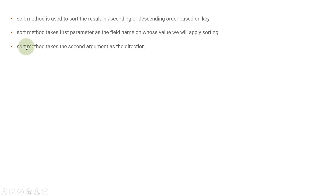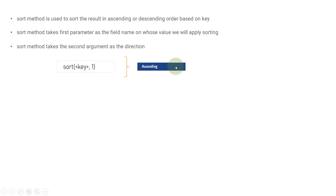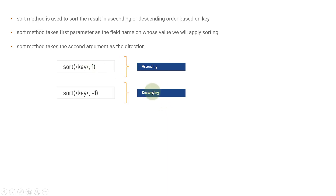The sort method takes the second argument as the direction. You need to provide the direction — whether it is ascending or descending. Ascending order uses 1 as the second parameter, and if you want descending sorting, you need to provide minus one.